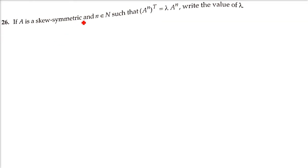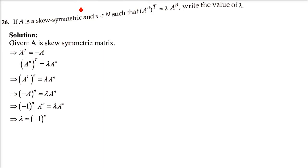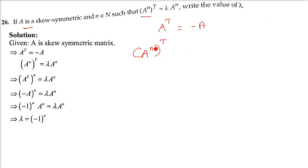Next: if A is a skew-symmetric matrix and n belongs to the natural numbers such that (Aⁿ)ᵀ = λ·Aⁿ, find the value of λ. Since A is skew-symmetric, Aᵀ = -A. Key property: taking the transpose of Aⁿ is the same as (Aᵀ)ⁿ — the order of transposing and raising to a power does not matter.